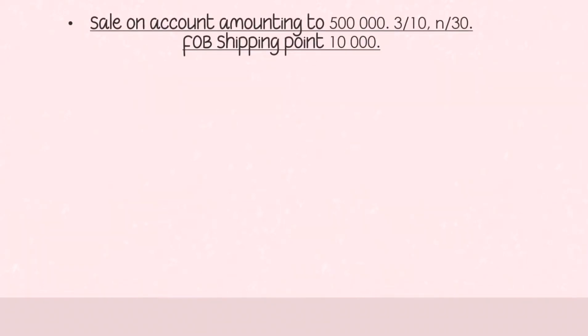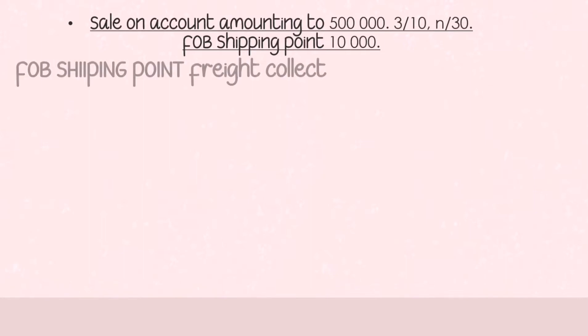To further understand the difference between the two shipping terms, let's look at some transactions from the seller's point of view. The first transaction: sale on account amounting to 500,000 with terms 3/10, n/30, FOB shipping point, freight cost of 10,000.